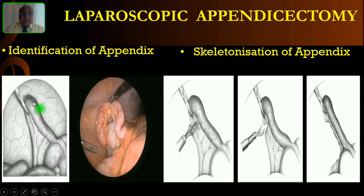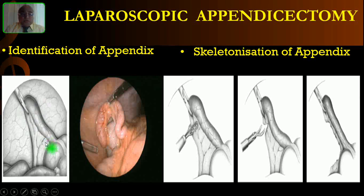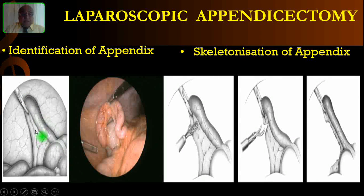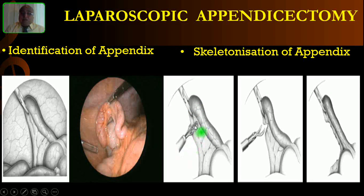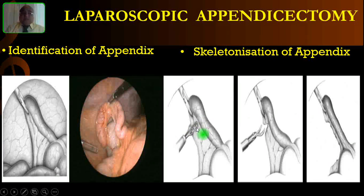After identifying the appendix, with the left-hand instrument port use a Maryland forceps or Babcock forceps to catch hold of the tip of the appendix. Lift it antero-laterally so you will see the entire appendix along with the meso-appendix. Here you are seeing an actual surgery picture of an inflamed appendix and the cecum. Then use a bipolar forceps to electro-desiccate this area — that is, coagulate the meso-appendix.